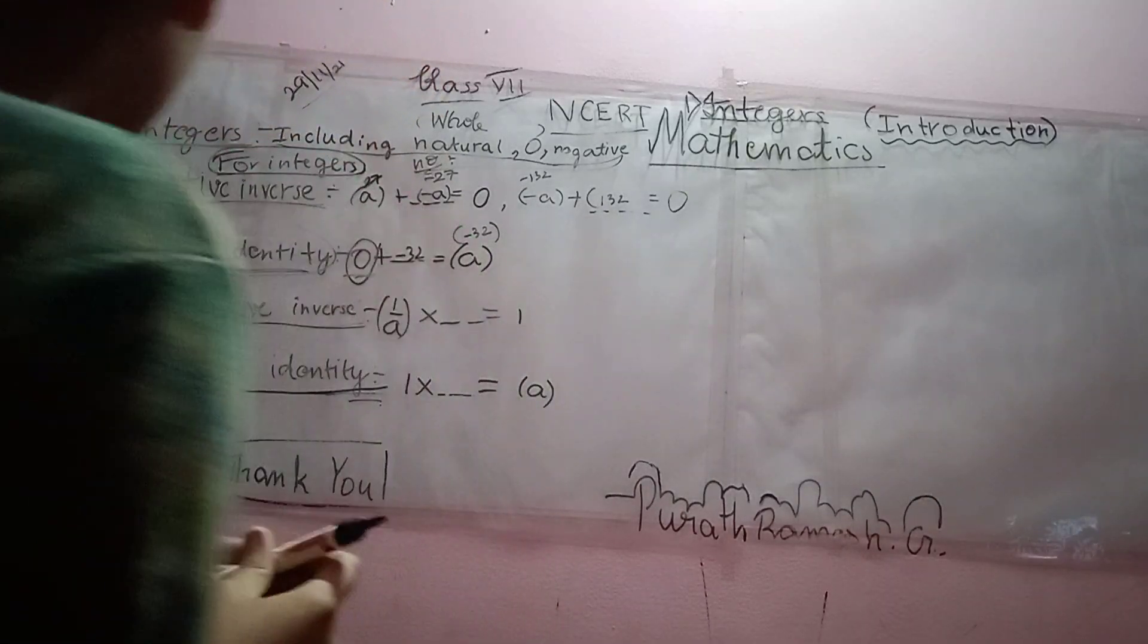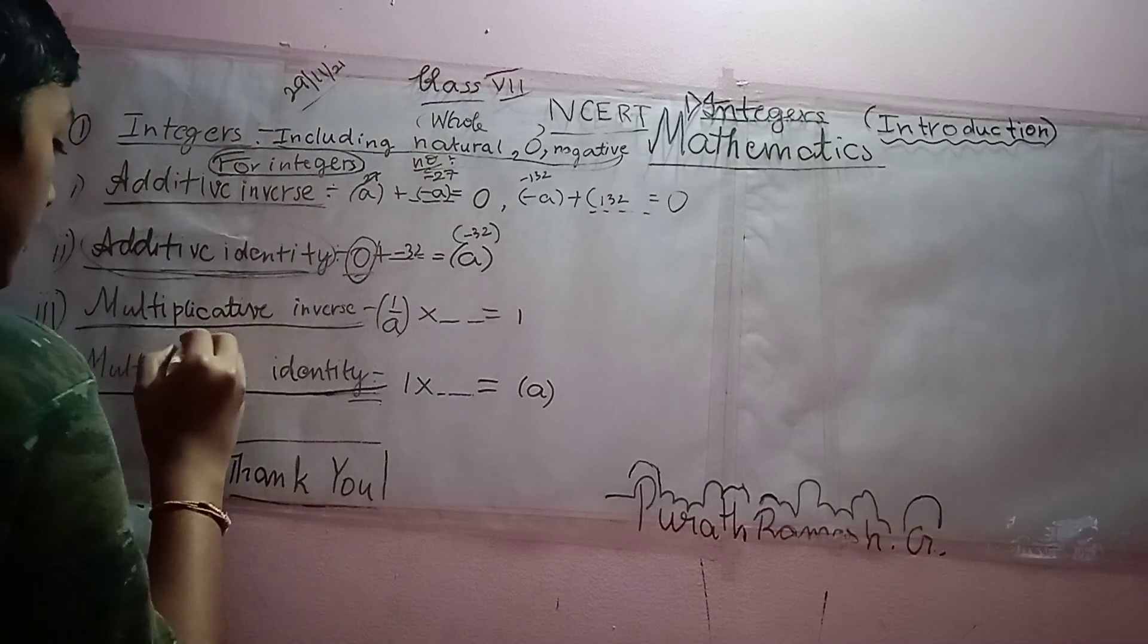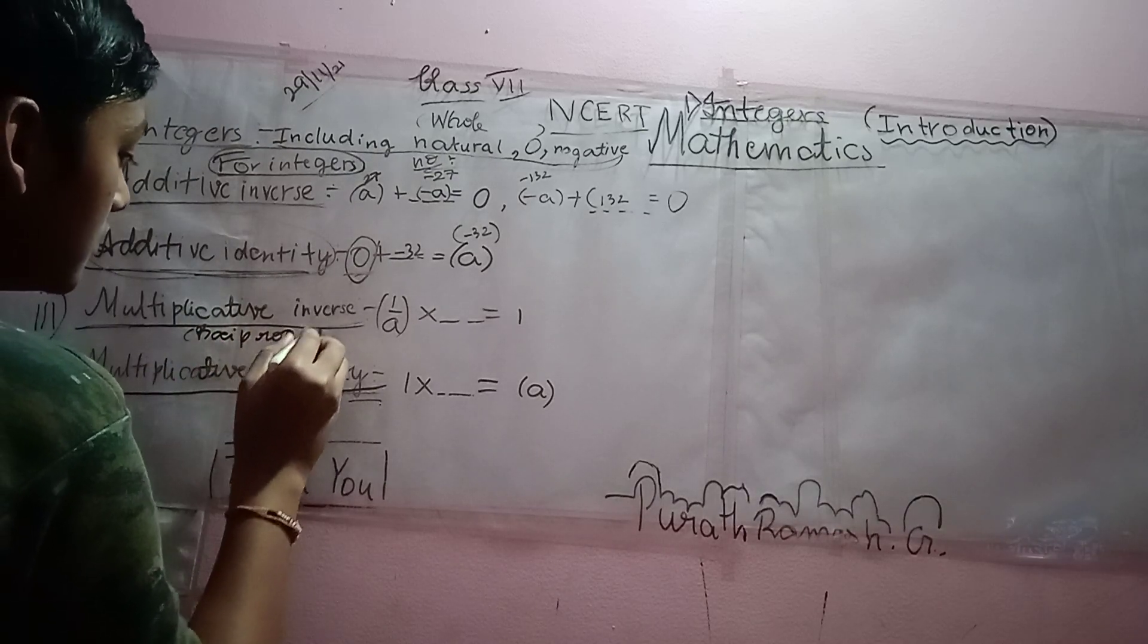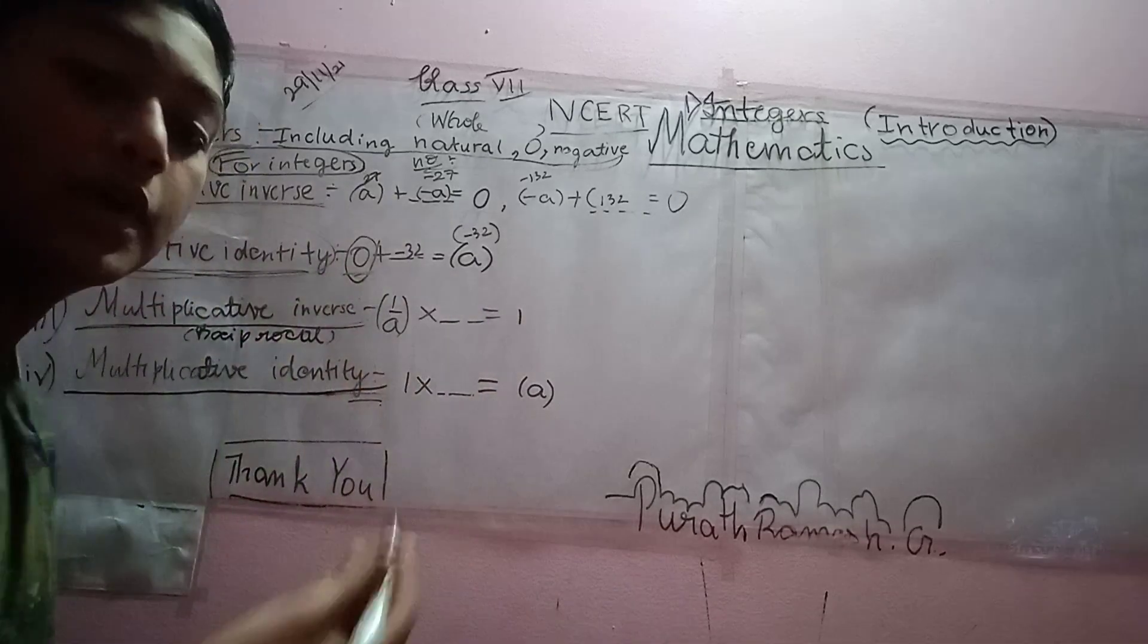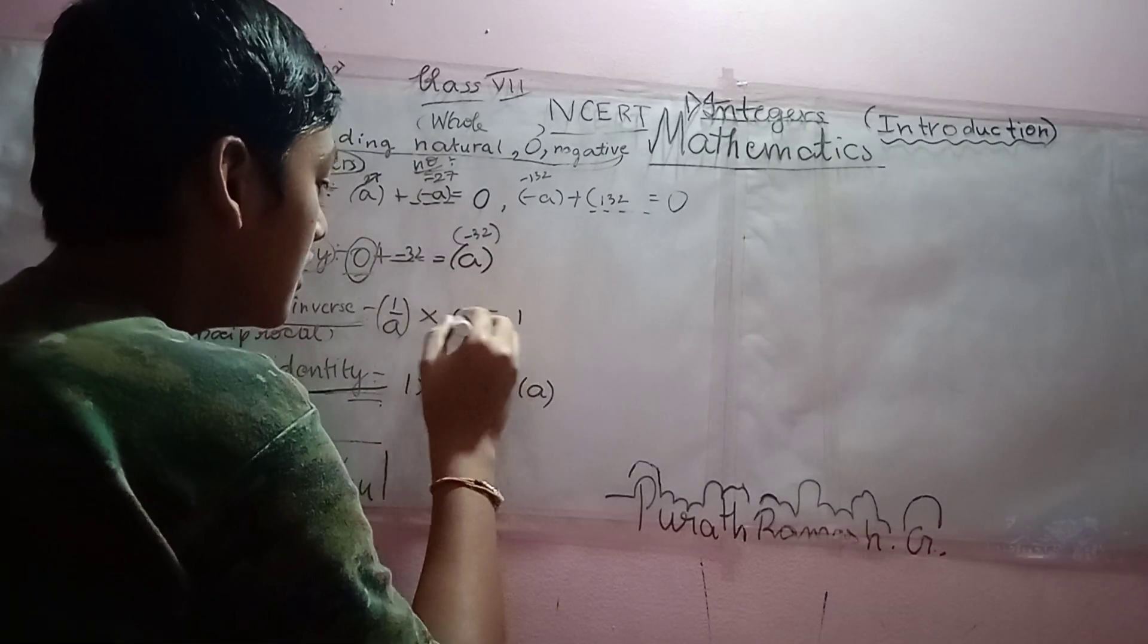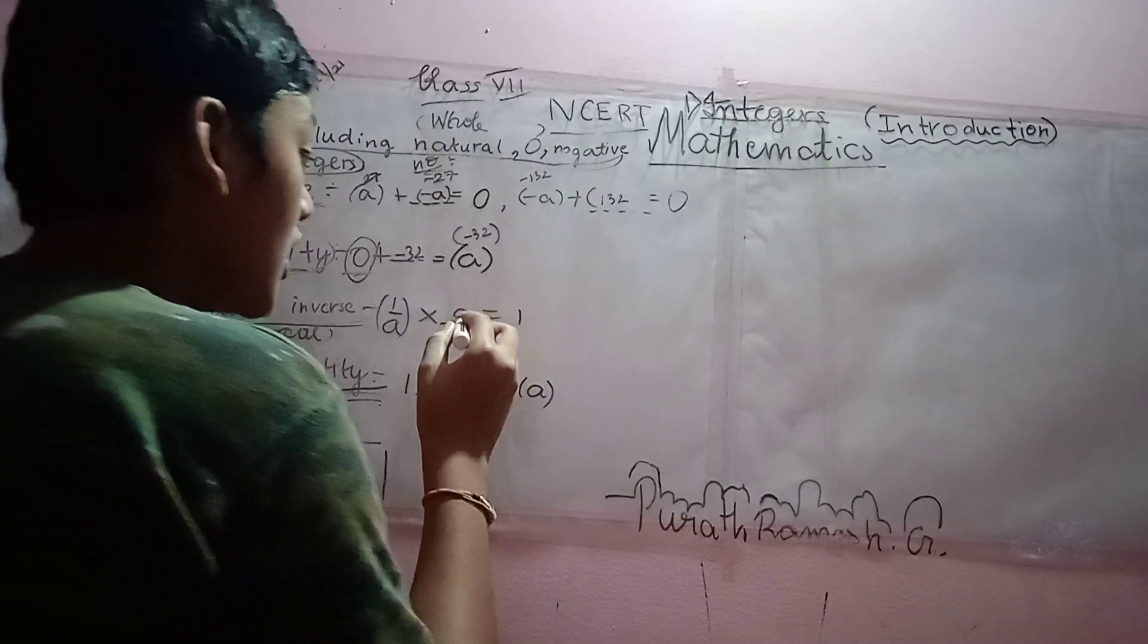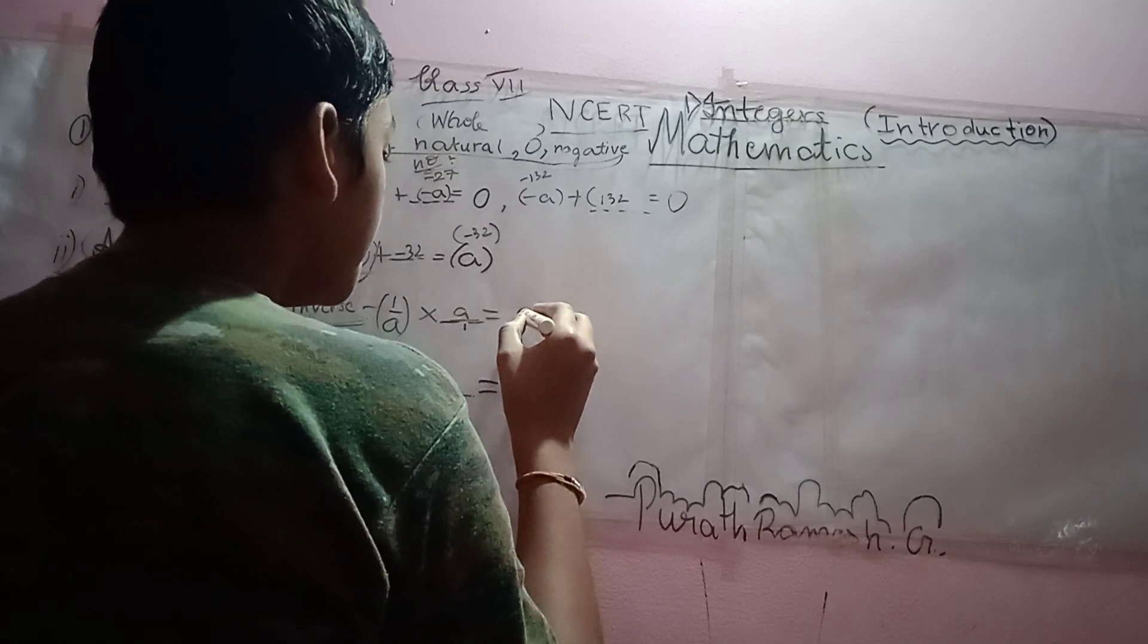Next, the third basic property is multiplicative inverse. We can call it as reciprocal. So, what is multiplicative inverse of minus A? Multiplicative inverse of minus A is just A by 1. A by 1 into 1 by A will give the answer 1.